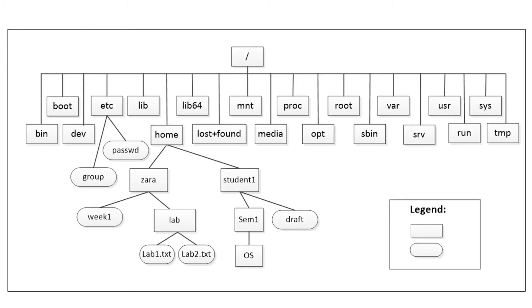This figure gives an overview of all directories in Linux. The root is the top directory and we have all the sub-directories that come together by default. For example, etc has the configuration files — password and groups are examples of configuration files under etc.